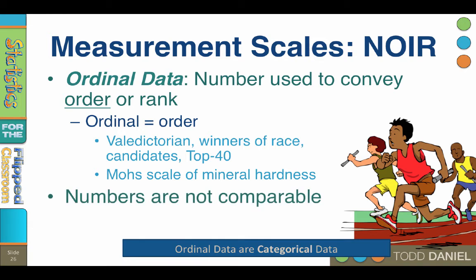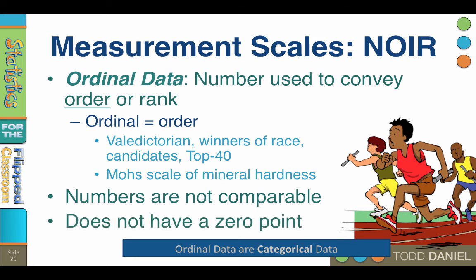Like nominal data, ordinal numbers are not comparable. Coming in first place in the potato sack race is not the same as being valedictorian, or having a number one single, or being first place in real estate sales. Ordinal data do not have a zero point or a zero place — even if you don't finish the race, you don't come in zero place. There is no zero in ordinal data. Ordinal data are also categorical data.